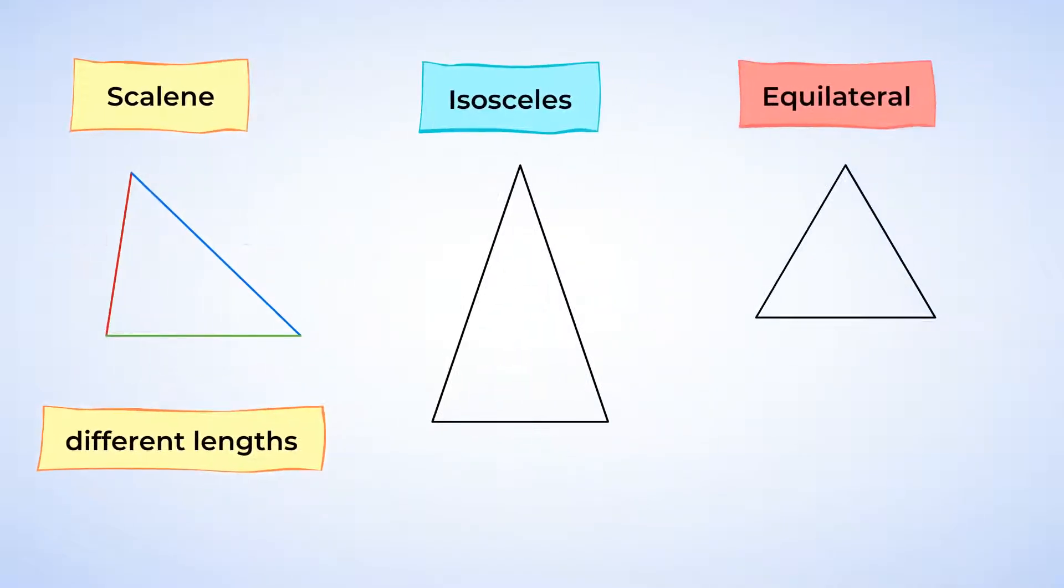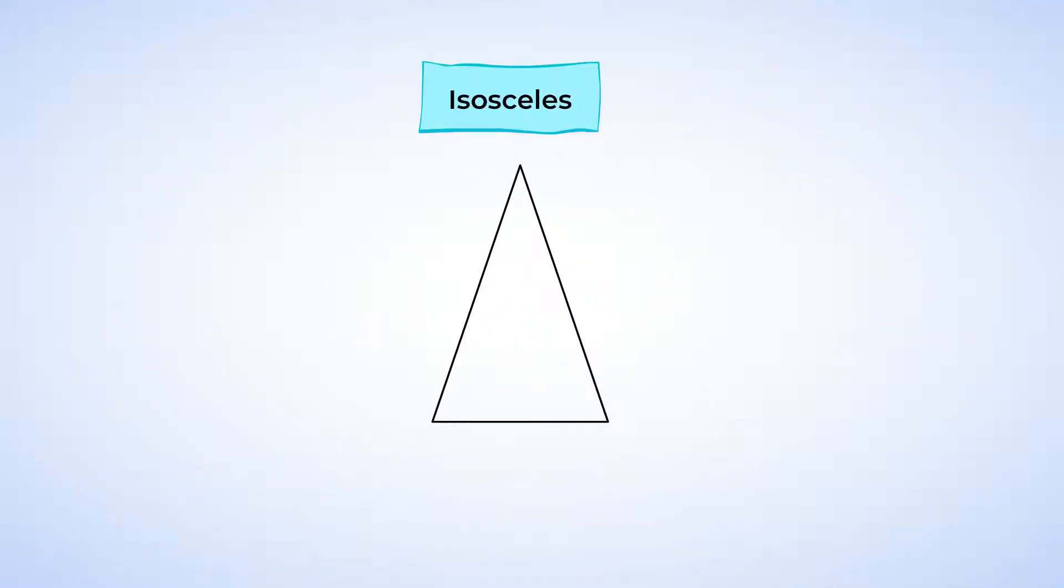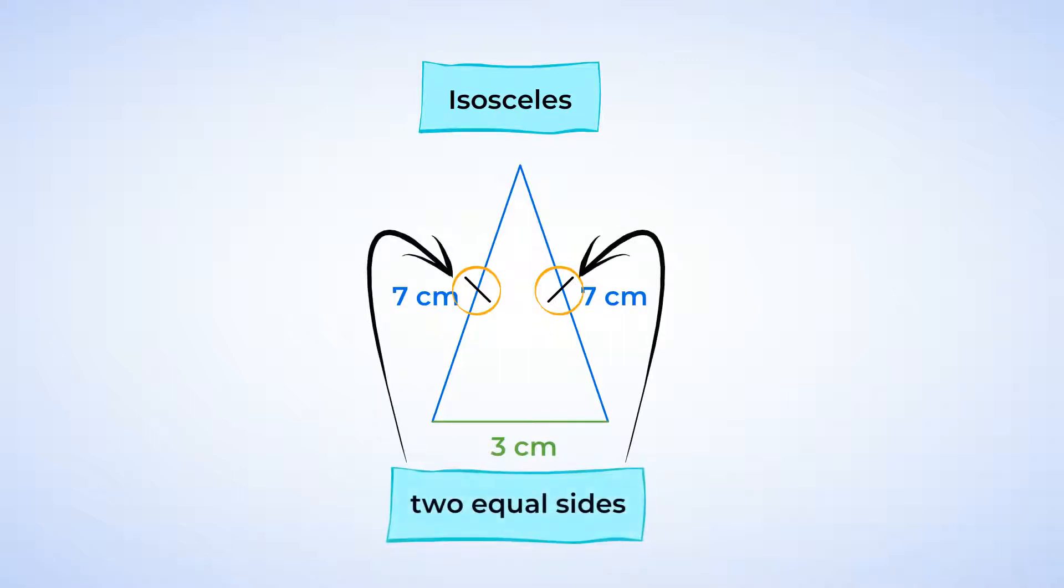The next type is called an isosceles triangle. An isosceles triangle has two sides that are equal. Check out this triangle. It has two sides of 7 cm each. Do you see those small tick marks on the sides of the triangle? They indicate that those two sides are equal. Since there are two sides that have the same length, this triangle is called an isosceles triangle.